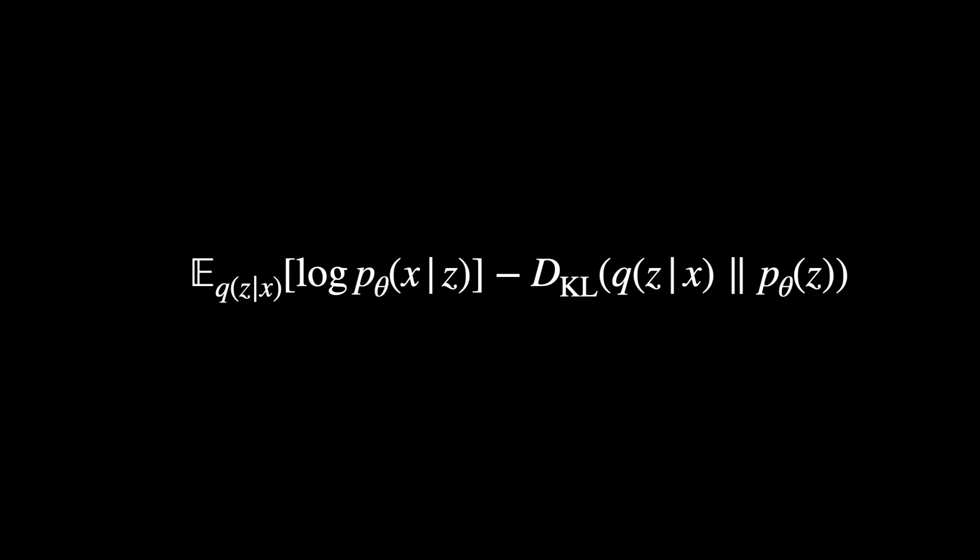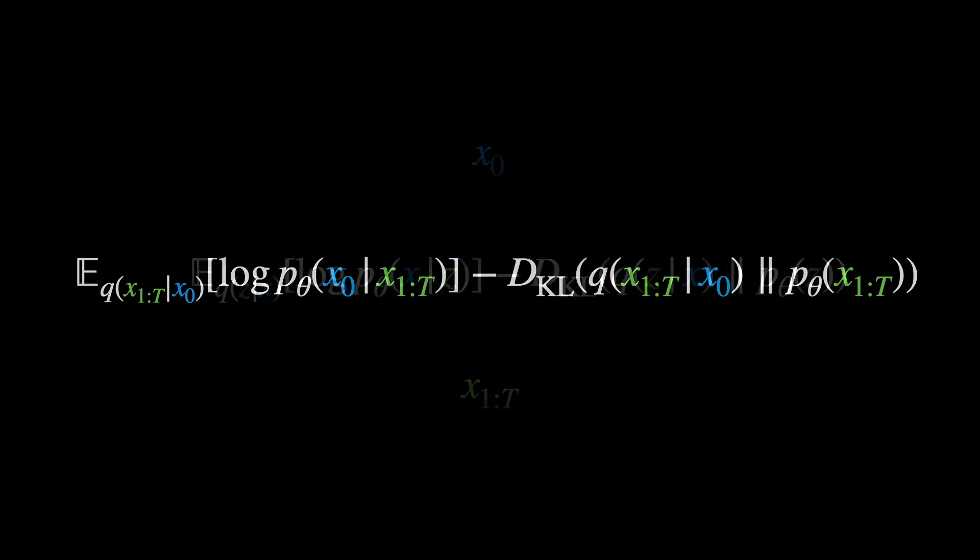As we saw earlier, x0 will serve as the observation in the diffusion model framework, while x1 through big T will take the place of the latent variable z here. Let's substitute these in. Alright, now let's simplify a bit.